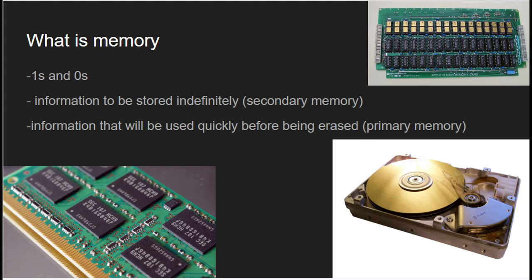Primary memory refers to the volatile memory used by the computer's processor to store data and instructions for the programs that are currently running. It is the main working memory of the computer and includes components like random access memory, RAM, and cache memory. RAM is a volatile type of memory, which means that the data stored on it is lost when the computer is turned off.